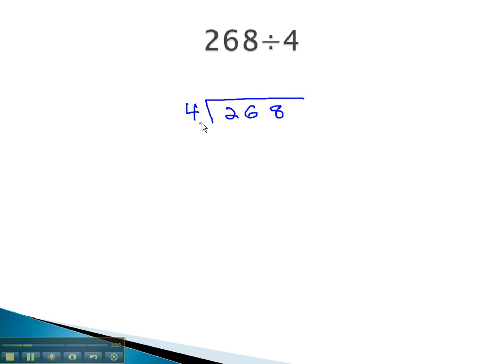As we divide, we'll divide the front number 4 into the front number 26. 4 goes into 26, 6 times. Now, we will multiply the 6 by 4 to get 24, and subtract, which will leave us with 2.